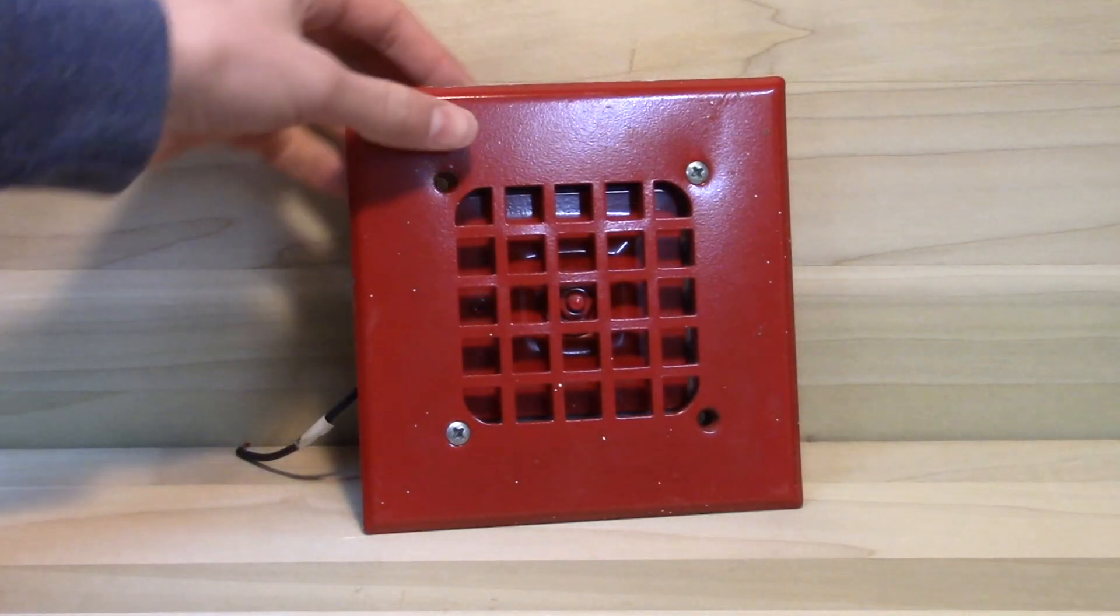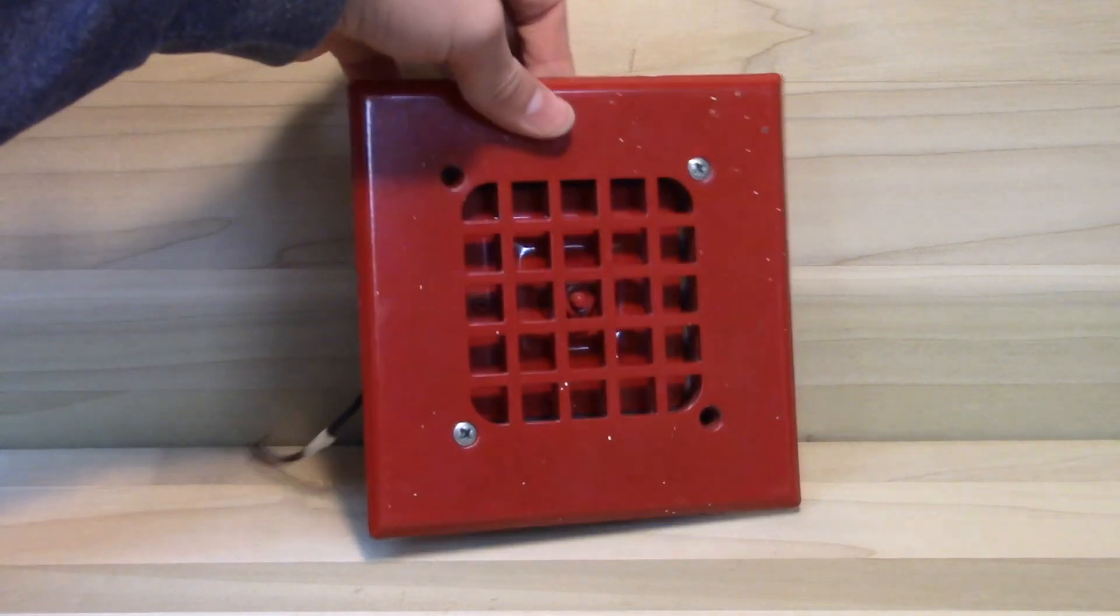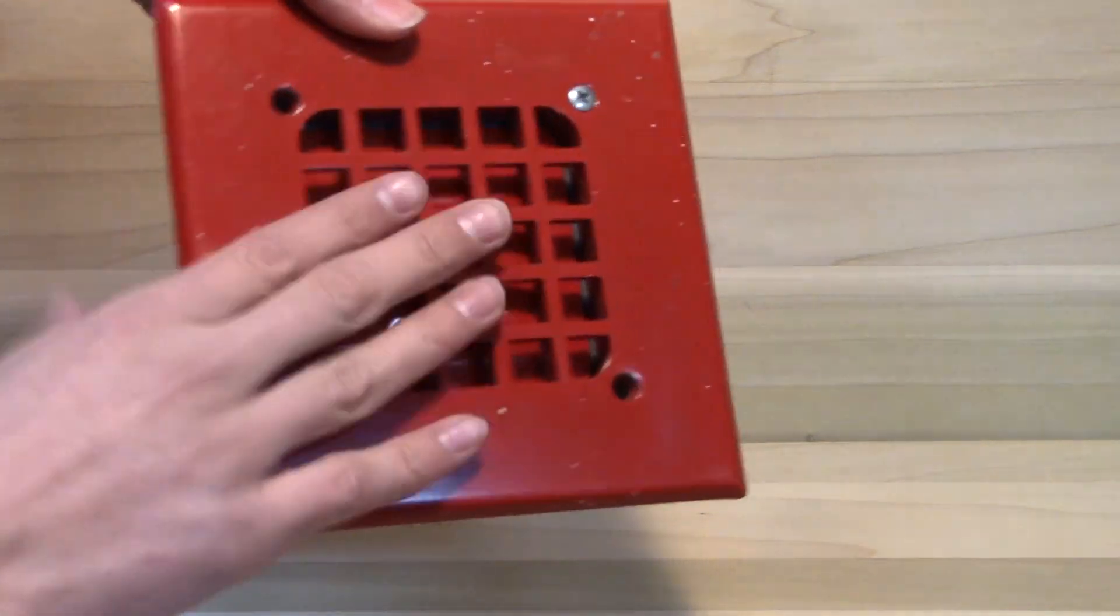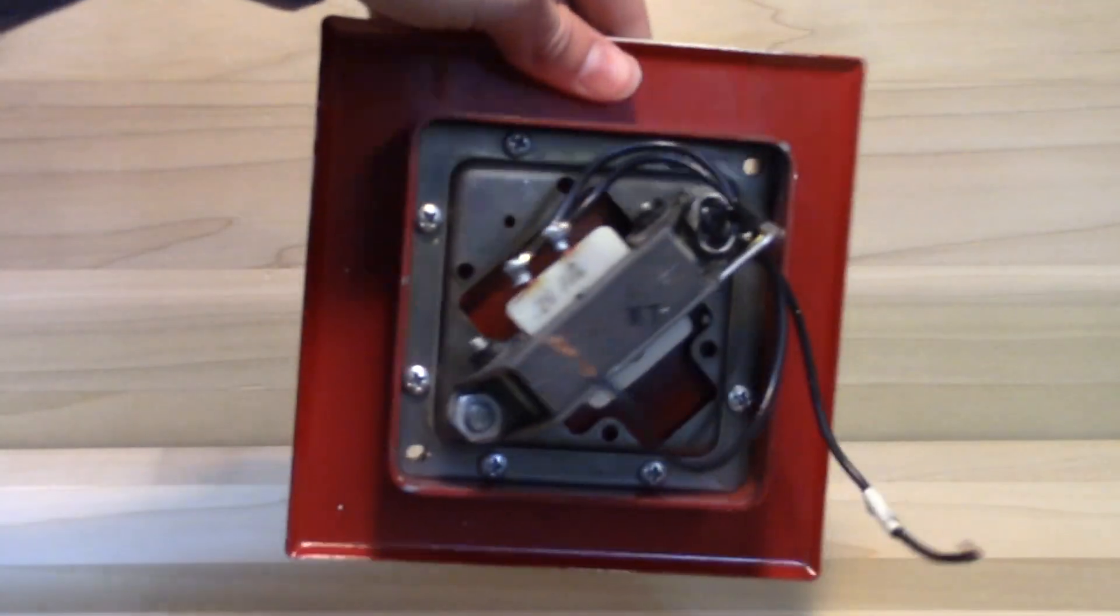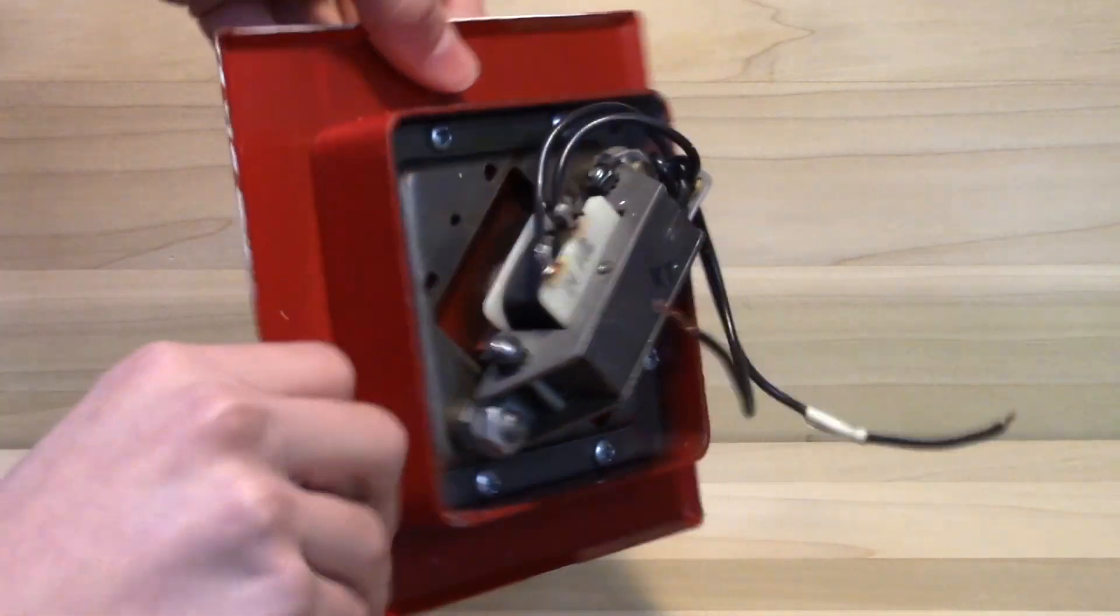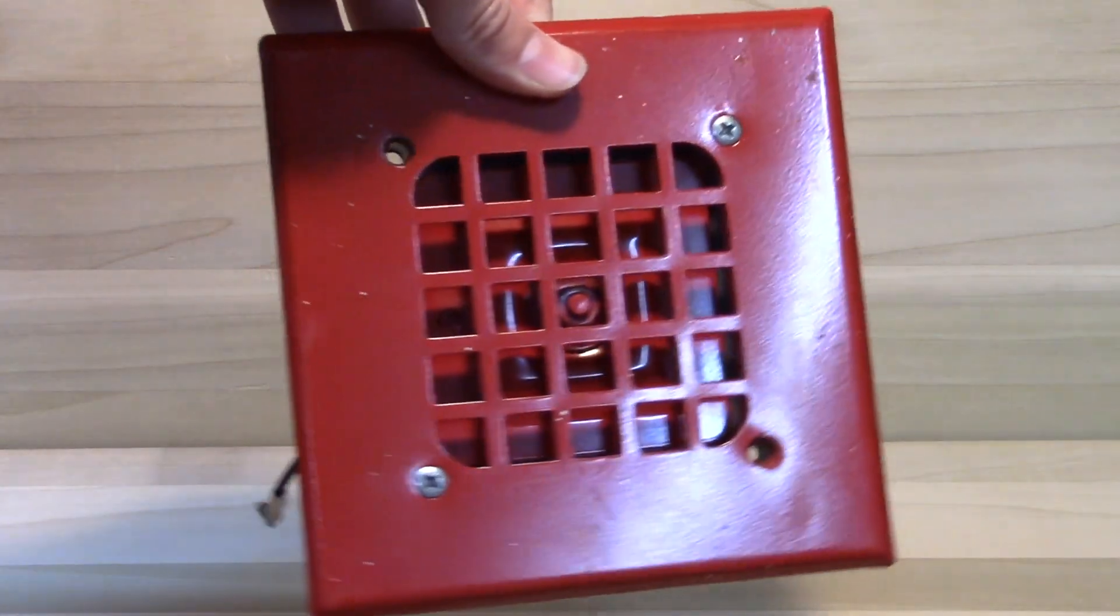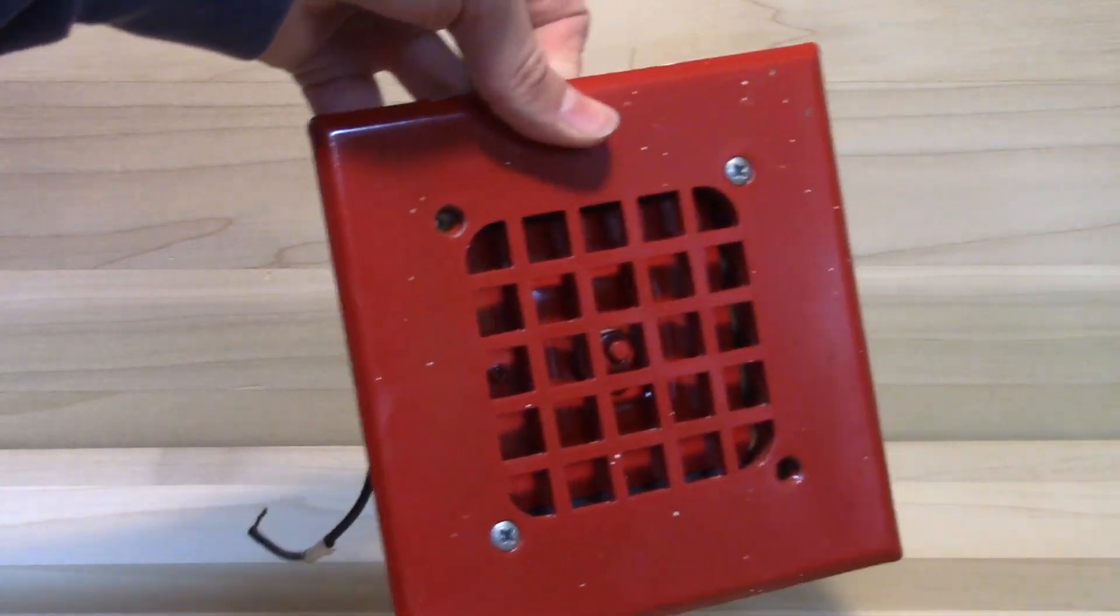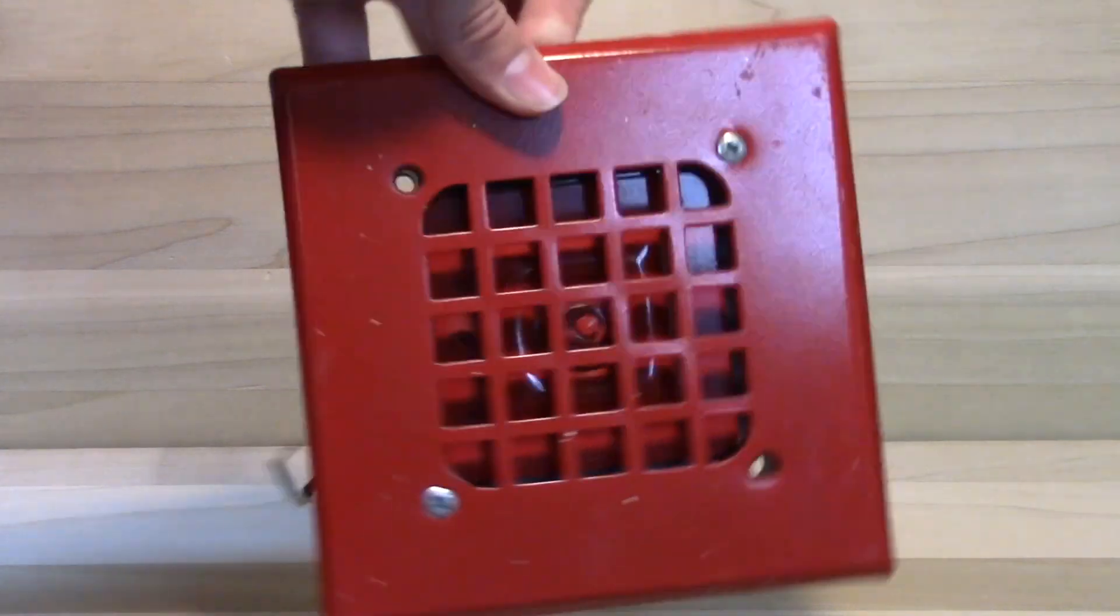So right here is what the flush mount cover plate looks like when it's screwed into the alarm. I think this looks really cool. And fun fact, I think I'm the only person on YouTube to have the flush mount cover plate with this alarm. So I think that's also pretty cool.